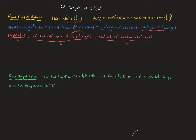If everything goes according to plan, anything without an h in it should cancel. The negative 3x squared and positive 3x squared cancel. The positive 2x and negative 2x cancel. The negative 1 and positive 1 cancel. So we've got negative 6xh minus 3h squared plus 2h, all over h. All of those have an h in the numerator, so we can factor that out. That leaves behind negative 6x minus 3h plus 2. That h factors out and cancels with the h in the denominator, so our final answer is negative 6x minus 3h plus 2.